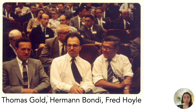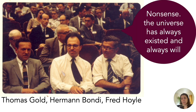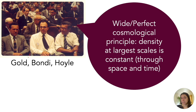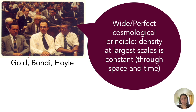Three other cosmologists — Thomas Gold, Herman Bondi, and Fred Hoyle — were staunch atheists who wanted to reject these theological commitments. They argued that the universe has always existed and always will, and didn't start with an initial big expansion. They argued against the Big Bang theory, partly through what they called the wide — or sometimes called the perfect — cosmological principle. The idea is that density at the largest scales of the universe is constant: if we measure how much stuff there is per unit volume, that's always constant through space and time.